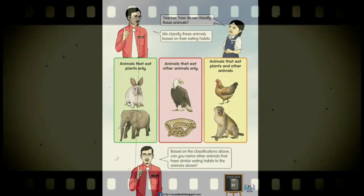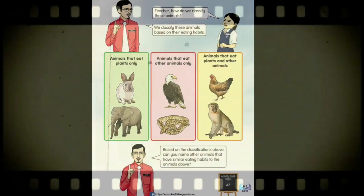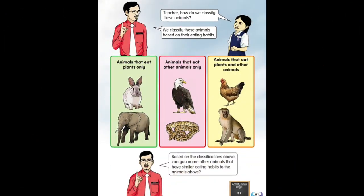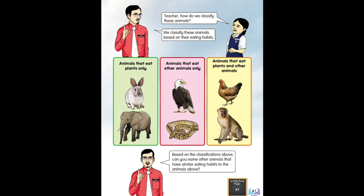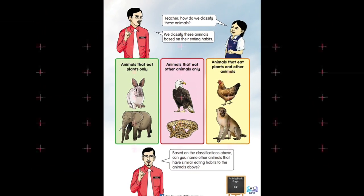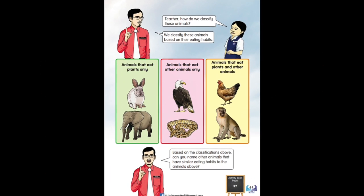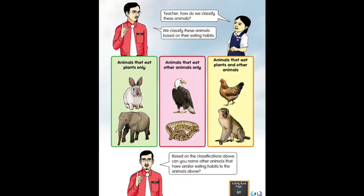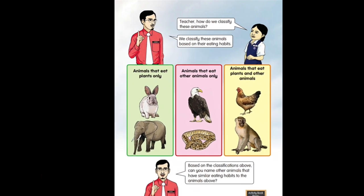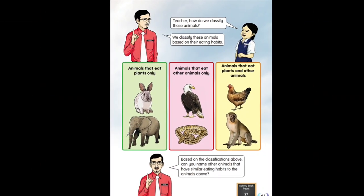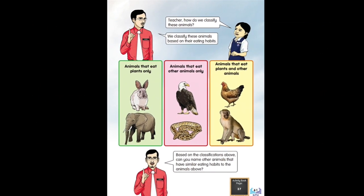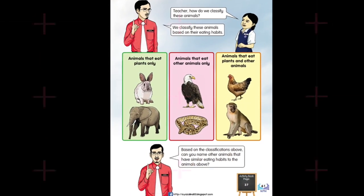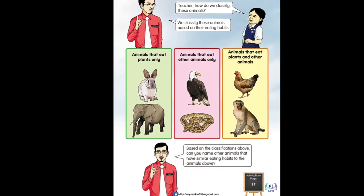Next, we move to page 61 in your textbook. There is a conversation between the teacher and the pupils. The pupils ask: 'Teacher, how do we classify these animals?' We classify these animals based on their eating habits. As we can see in the pictures in the middle, there are animals that eat plants only, animals that eat other animals only, and animals that eat both plants and other animals. Under animals that eat plants only, we have rabbit and elephant.